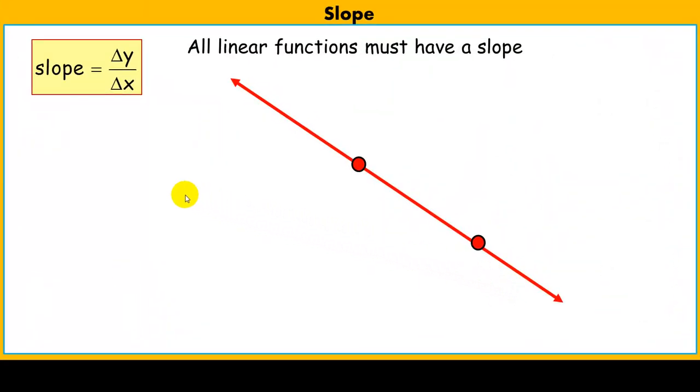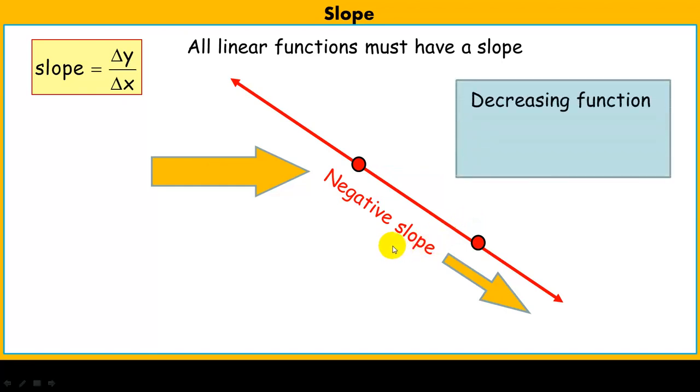Now if I'm reading from left to right, and I notice this function. Notice as x is increasing, as soon as I hit one point and then compare it to the next point, as x is increasing, now we see that y is decreasing in the x direction and the y direction. So we call this a negative slope. It's a decreasing function. That means when our input, our x's, are increasing, our outputs are now decreasing.